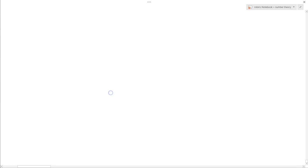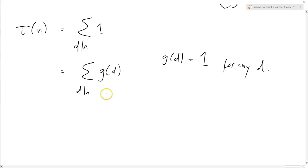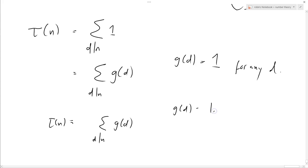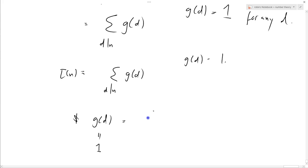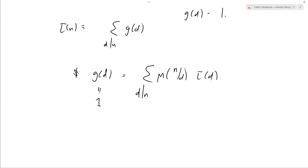So there's τ. τ(n) equals sum over d divides n of g(d), where g(d) equals 1 for any integer. So what happens when we apply the Möbius inversion formula to this? Well that basically says that g(d), which equals 1, equals sum over d divides n of μ(n/d) times τ(d). There you go, that's quite nice, isn't it? Let's have an example of that, let's try an example. Let's try n equals 12 and see what happens.